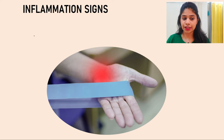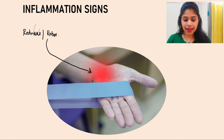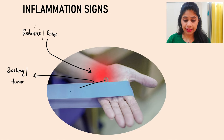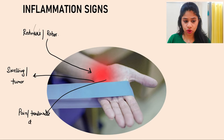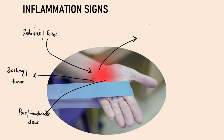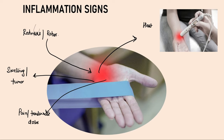The first classical sign of inflammation is redness, otherwise called rubor. The second sign is swelling, also called tumor. The third sign is pain or tenderness associated with the inflamed area, called dolor. The fourth sign is heat — if you touch the inflamed area it will be slightly warmer compared to surrounding areas — and this is called calor. These four signs were described by Celsius.